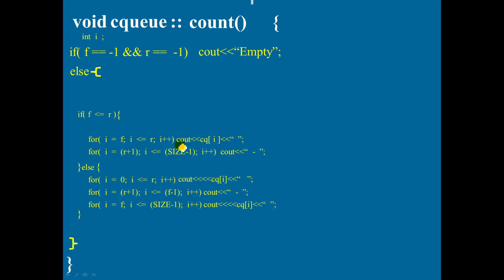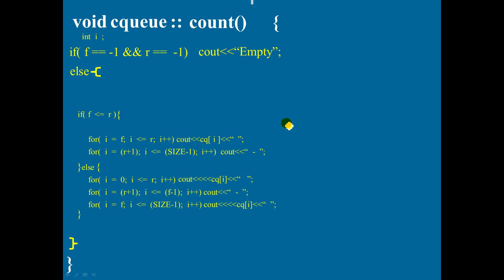Here, you are displaying the elements, but in the new function we need to count the elements. So this cout statement should be replaced with a c++. And when you write c++, don't forget to declare the variable and give it the initial value 0.